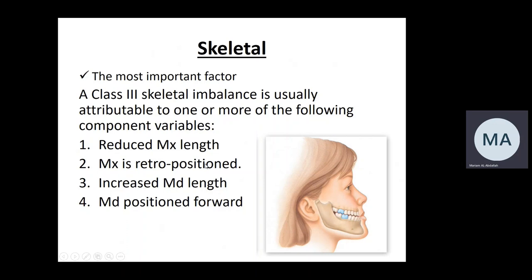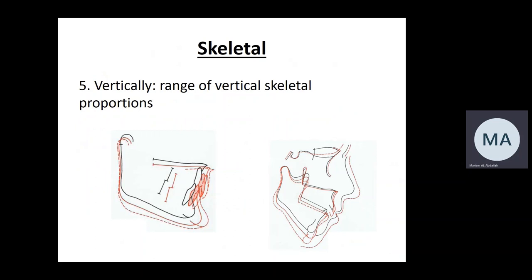The mandible could be long or positioned more anteriorly, contributing to a prognathic mandible. It could also be a combination of all these. In the vertical dimension, the skeletal pattern is usually variable — it does not contribute directly to the class three pattern, but it contributes to the difficulty and prognosis of treatment. Patients with class three skeletal pattern could present with average, increased, or reduced vertical proportions; there is no specific vertical pattern.